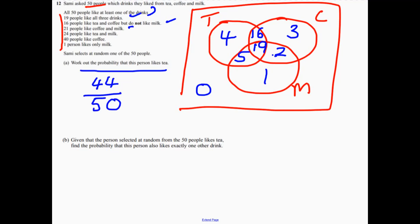And there are 50 people all together. It doesn't say anything about cancelling this down, but you could write 22 over 25. Or if you want to write it as a decimal, it would be 0.88.